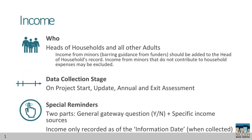Income is collected for heads of households and other adults in the household. Income from minors should be added to the head of household's record. If the minor's income does not contribute to the household expenses, then it may be excluded from HMIS collection. If you have other guidance from funders, follow that guidance and check in with the data center to ensure there are no conflicts.